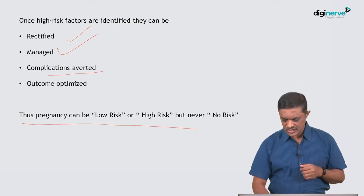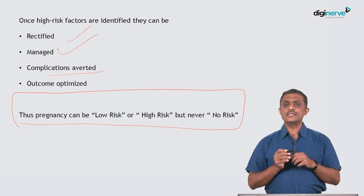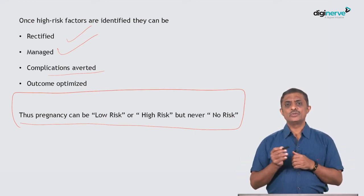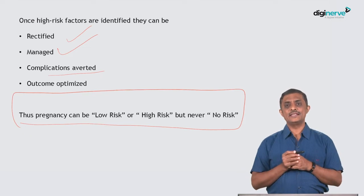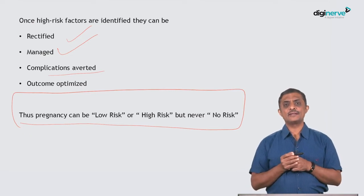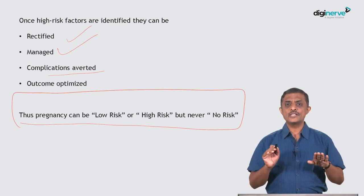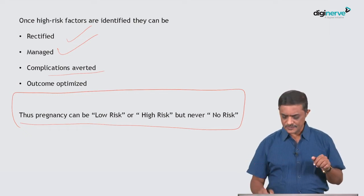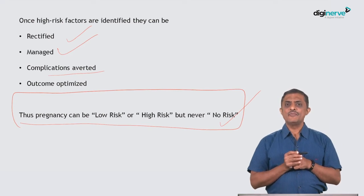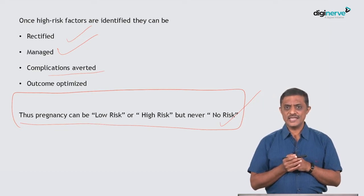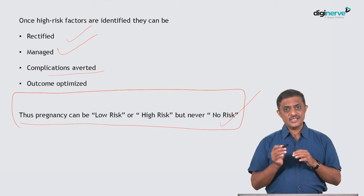With all these things, we aim at optimizing the outcome. In pregnancy, every pregnant woman unless otherwise proved should be considered as having a risky pregnancy, but with the prefix of low risk or high risk. When you identify some risk factor it becomes a high-risk pregnancy; when you find no risk factor at the time of examination, it is a low-risk pregnancy. There is no concept of no-risk pregnancy. Even the elders say that pregnancy and childbirth are like a rebirth for the mother.